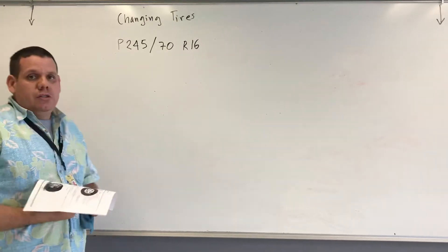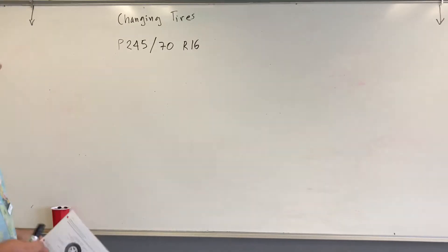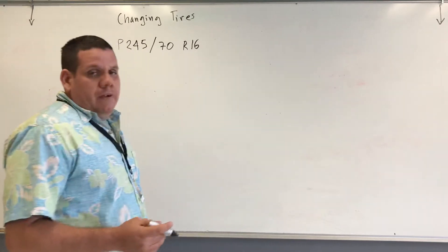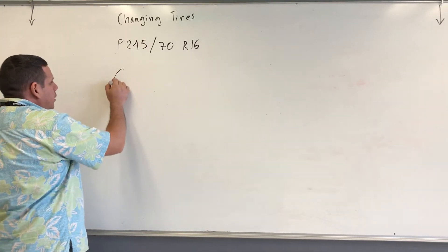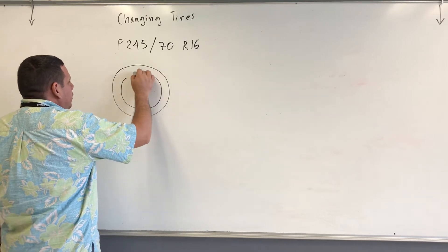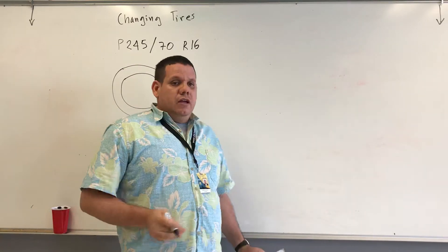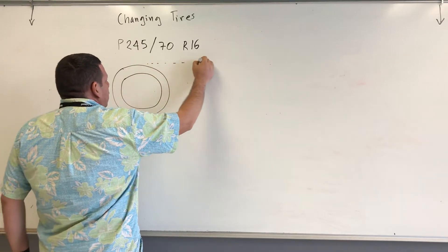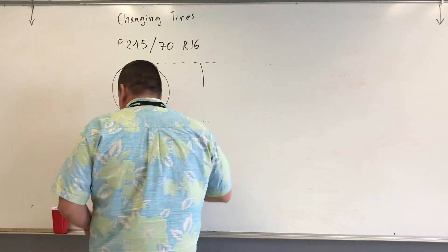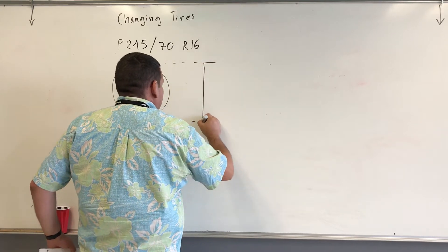In this case, I have the model P245/70R16. What do these mean? I will make a drawing of a tire of any regular car. Let's suppose we have this tire with its rim, and then I will draw the same thing as if you are looking from the other side, making the projection for this circle.